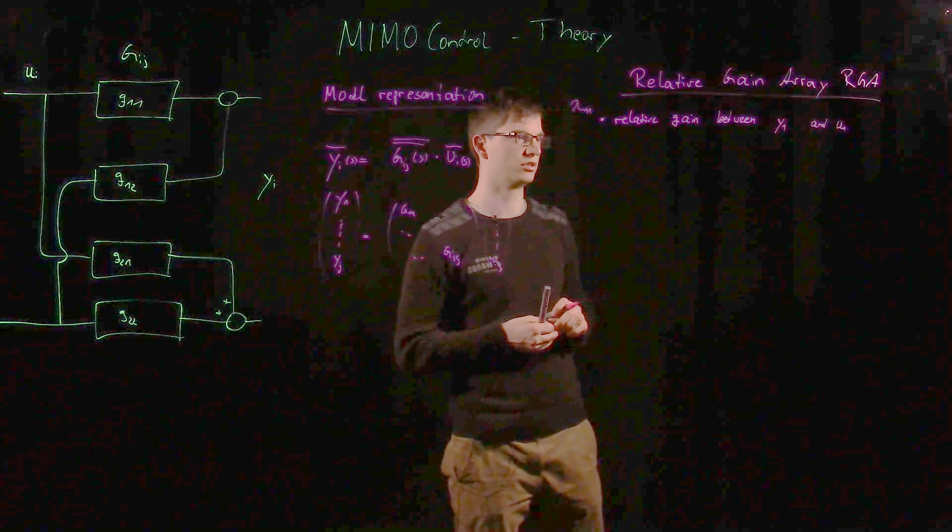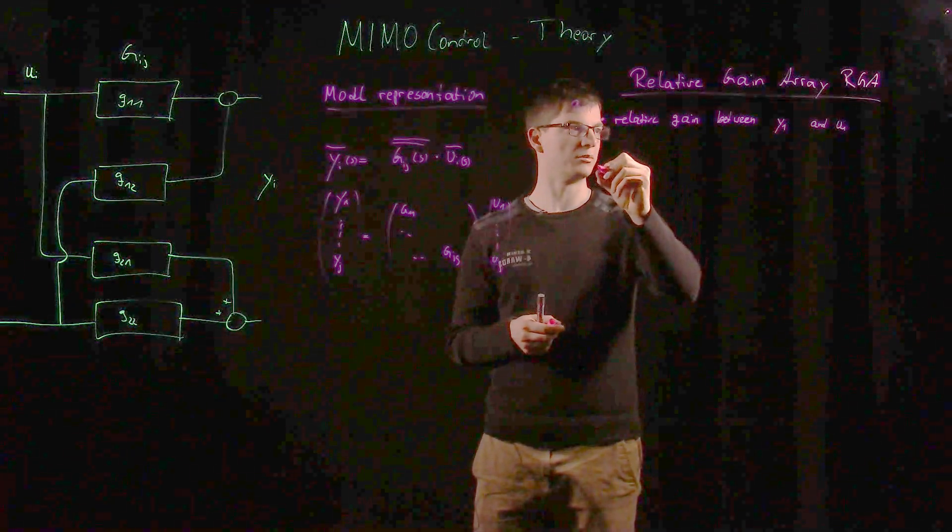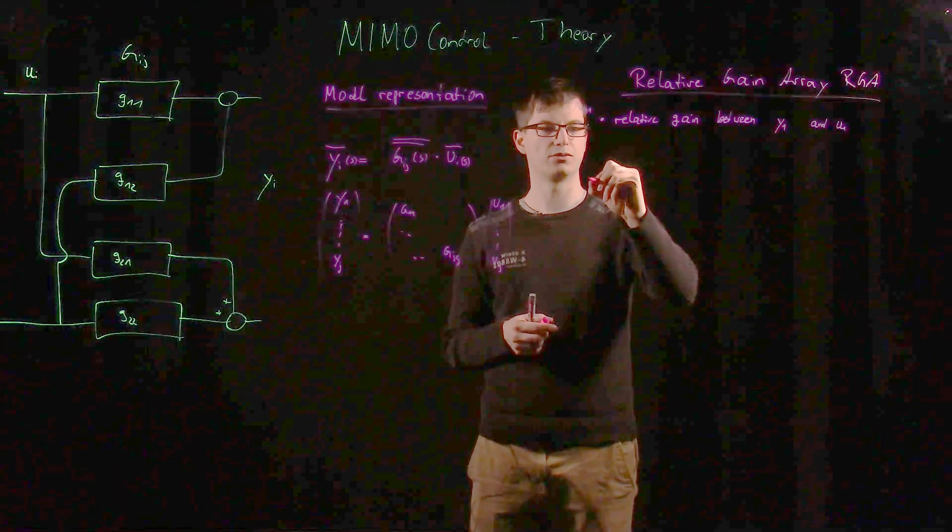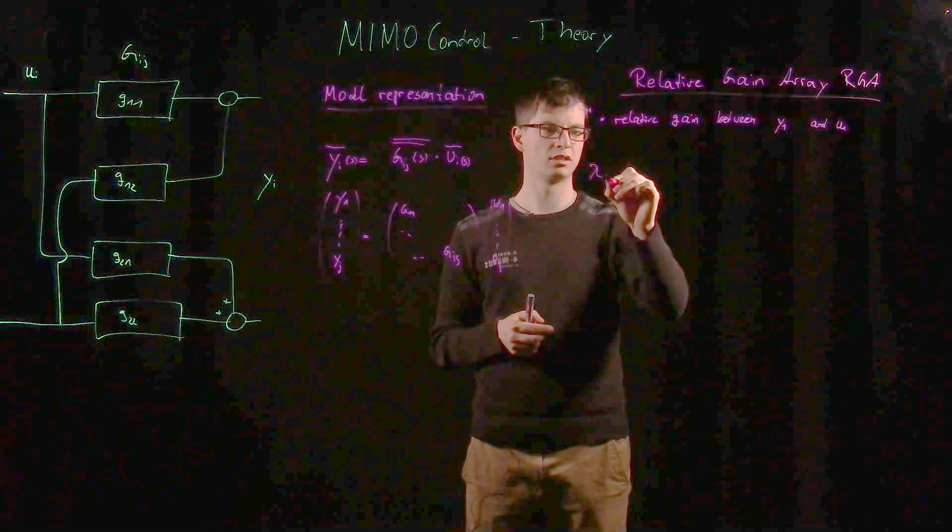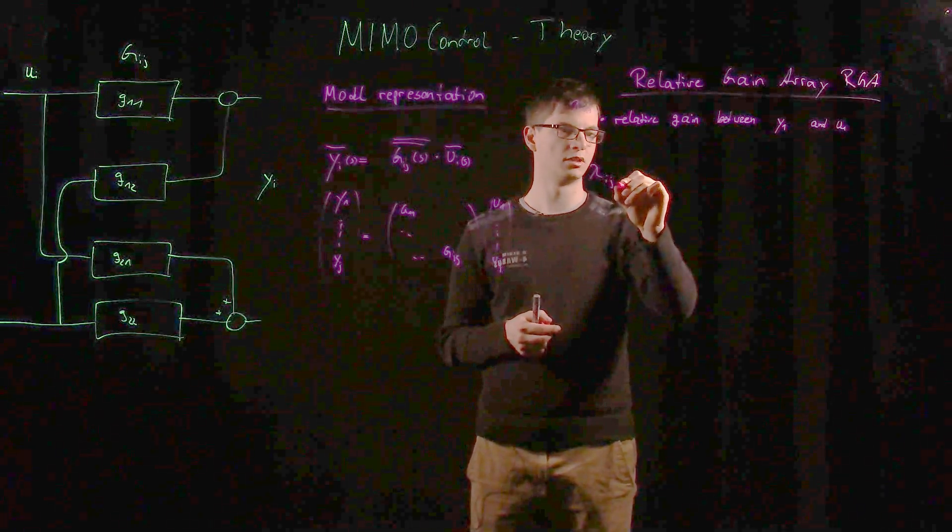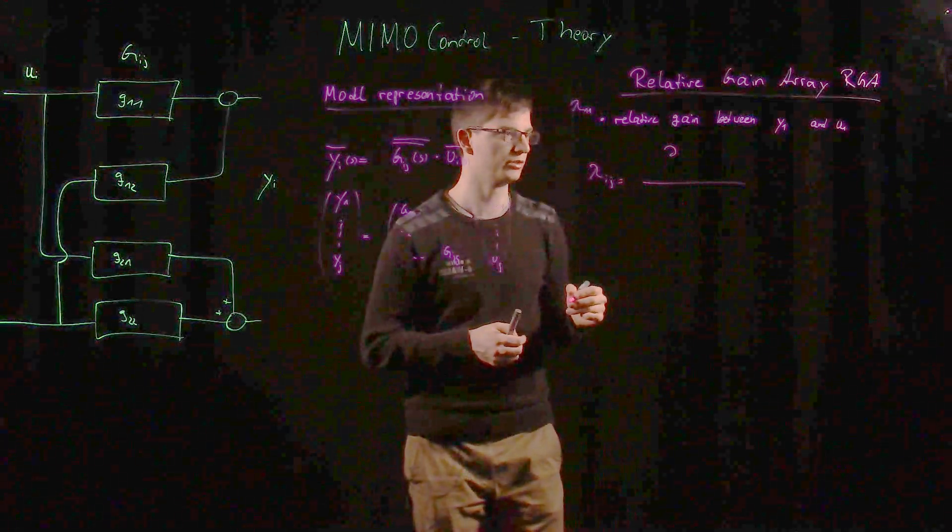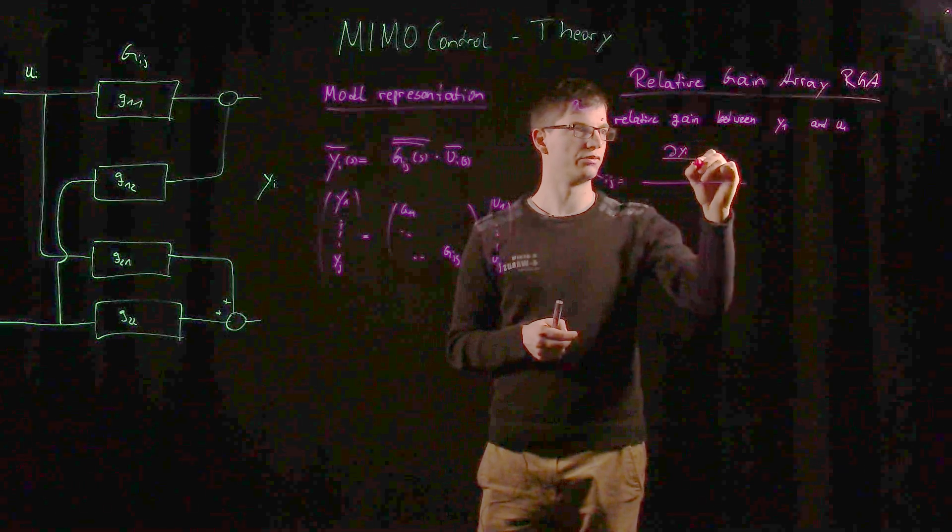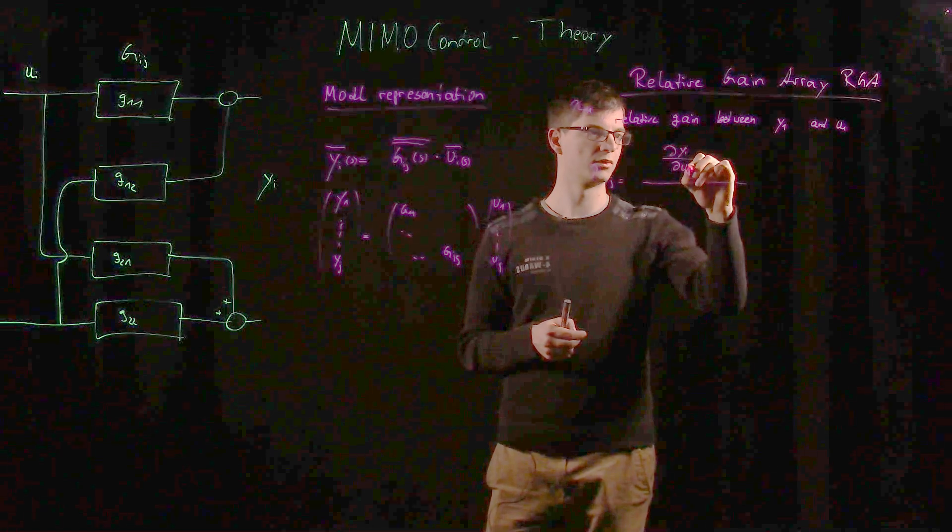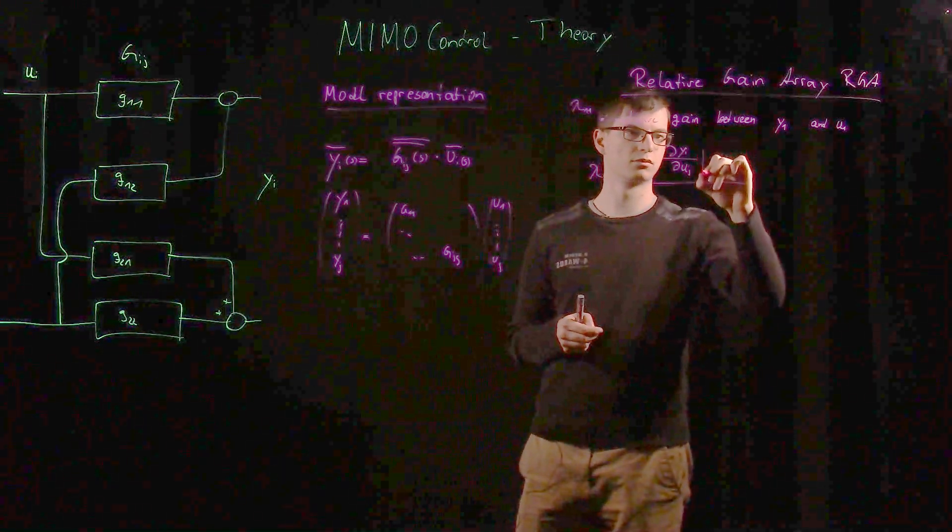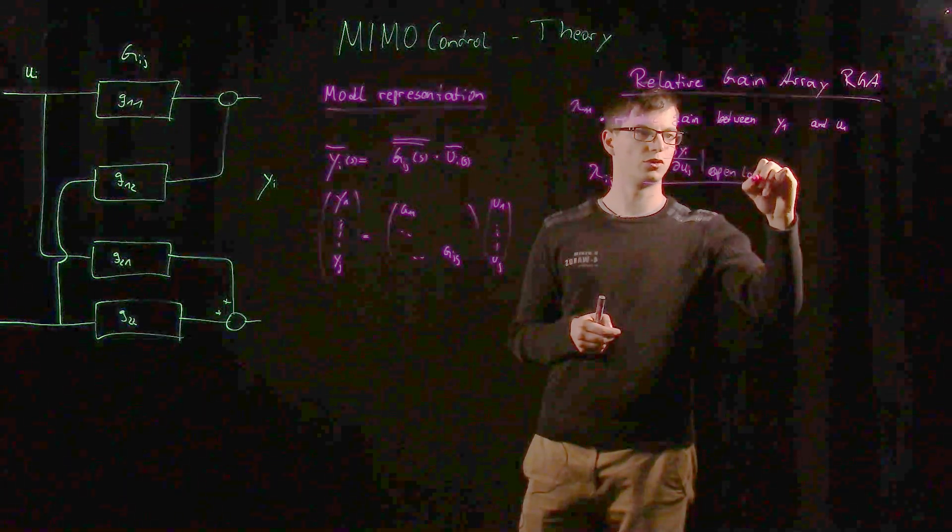That's something we can write down in a mathematical way. It has a definition and this lambda can be calculated as follows: it will be a matrix with dimensions i,j, and that is partial y_e over partial u_j for all loops open.